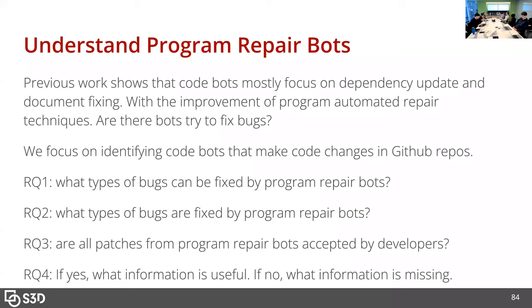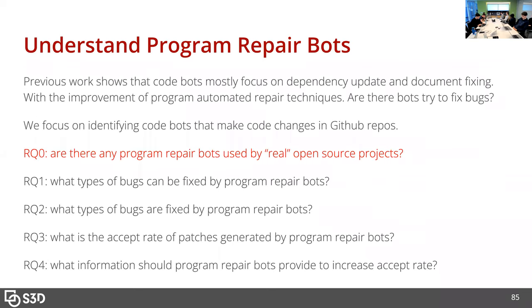How can we improve the technique to help industry adopt it better? Initially we were trying to answer four research questions, starting from: what type of bugs can be fixed by existing program repair bots? And what type of bugs are actually fixed by program repair bots? We also want to understand: are all patches from program repair bots accepted by developers? If yes, what information is useful? If no, how can we improve the acceptance rate? However, we actually forgot to ask research question zero: are there any program repair bots used by real open source projects?